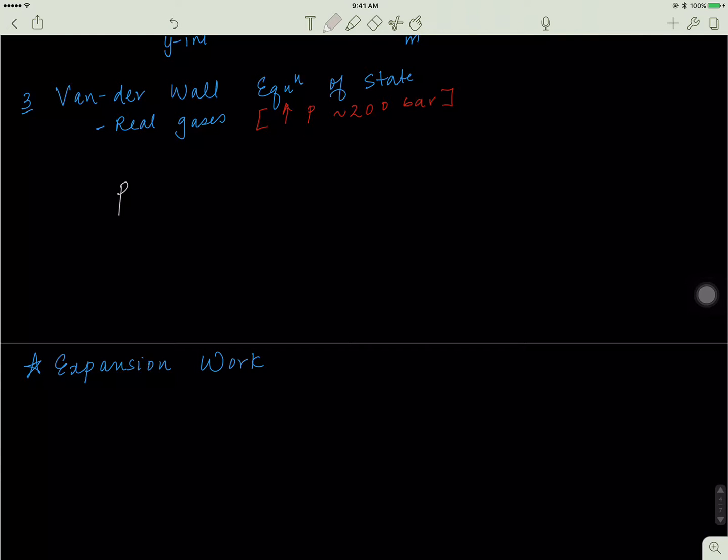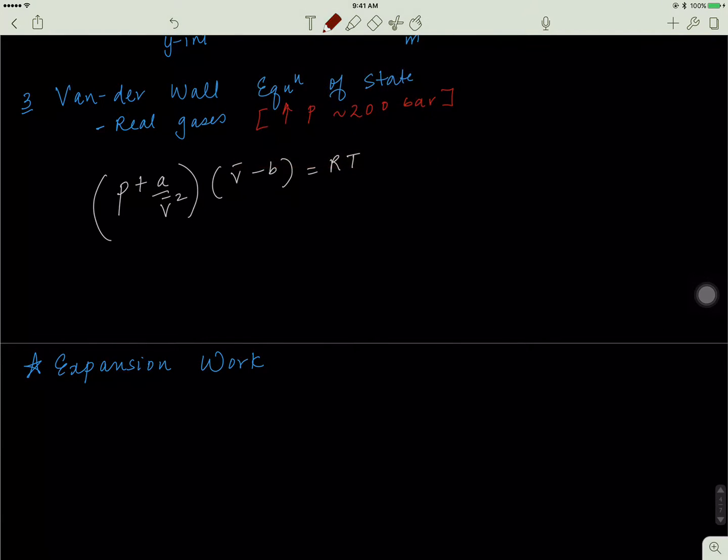It's P plus A over V squared, V bar squared - remember this is our molar term - times V bar minus B equals RT. So this is the Van der Waals equation, let's see what it means.